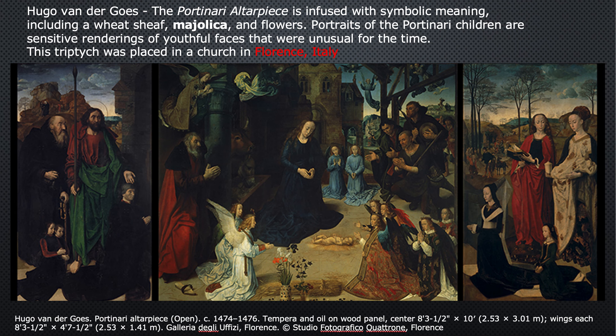This is a painting by Hugo van der Goes. The Portinari Altarpiece is infused with symbolic meaning, including a wheat sheaf, majolica, and flowers. Portraits of the Portinari children are sensitive renderings of youthful faces that were unusual for the time. This triptych was placed in a church in Florence, Italy — I think that's important. The main subject of the center panel is the Adoration of the Shepherds — one of the first events after the birth of Jesus, when the shepherds came in from the fields and worshiped him.